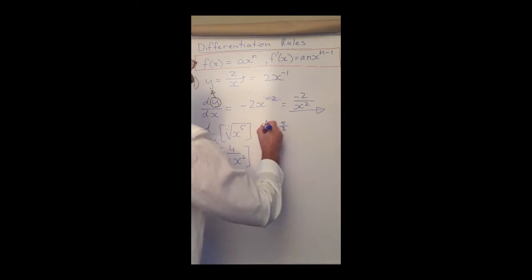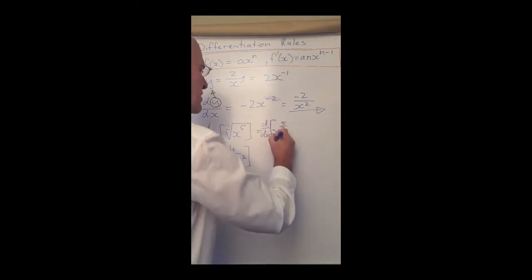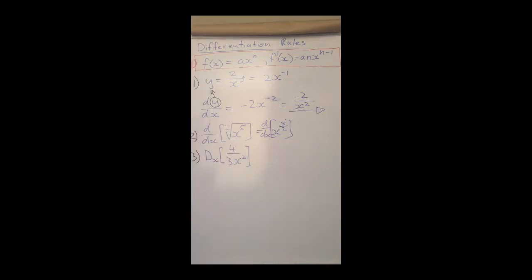And remember we want to d/dx it, right? We want to d/dx x to the power of 5 over 2. Now we can apply the rule very easily.